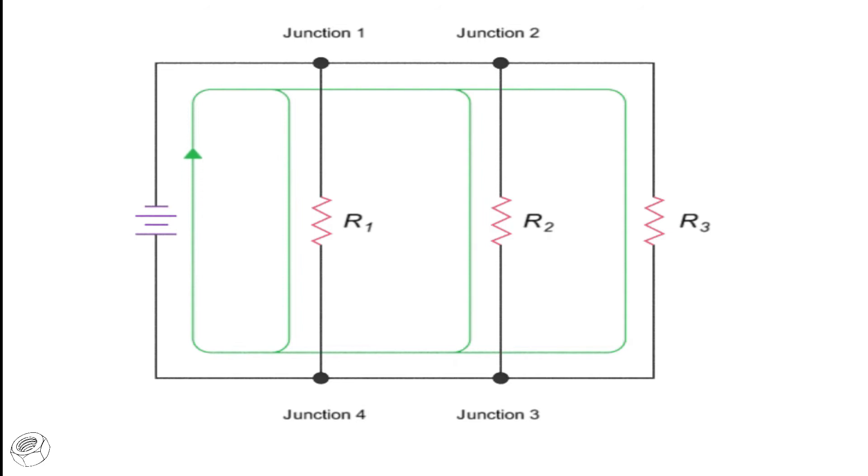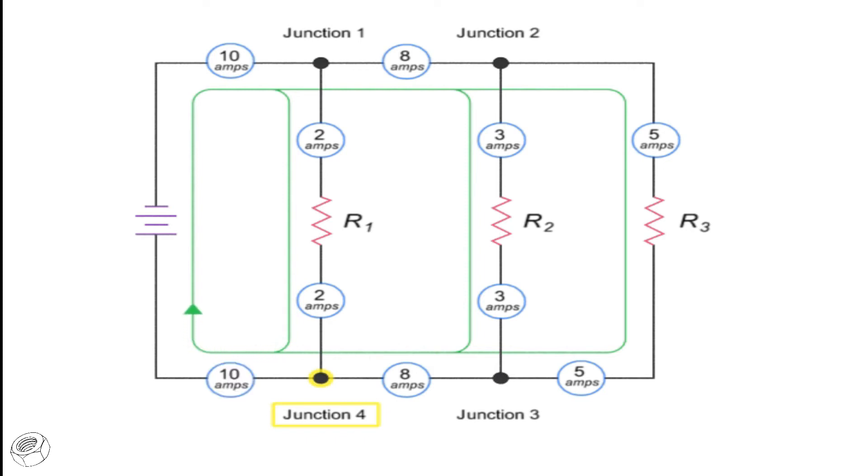As the 10 amp current travels away from the source, it splits at junction 1 into two branches that have currents of 2 amps and 8 amps. The circuit branches again at junction 2, and the 8 amp current splits into 3 amps and 5 amps. As the current returns through junction 3, the 3 amp and 5 amp values recombine to give an amp value of 8. At junction 4, the 2 amps and 8 amps currents recombine to equal the 10 amps of the original source current.